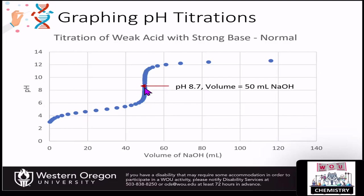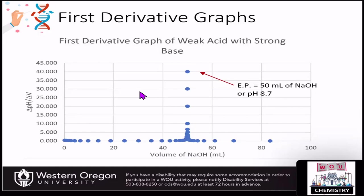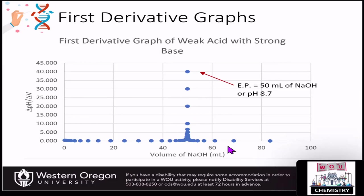Sometimes the equivalency point does not show up really well, so it might be hard to see on this type of graph. We have some derivative graphs that we can do to try to help us identify that point. On the first derivative graph, you can see the equivalency point here and drop it down right here at the 50 mark. You still have the volume of the base on the x-axis, but now the y-axis is the change in pH over the change in the volume of the base.